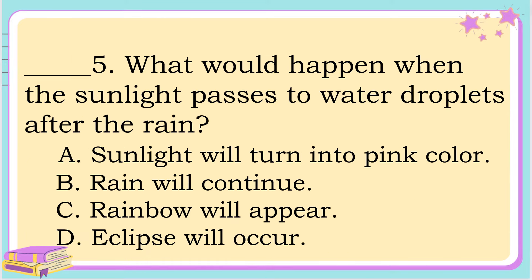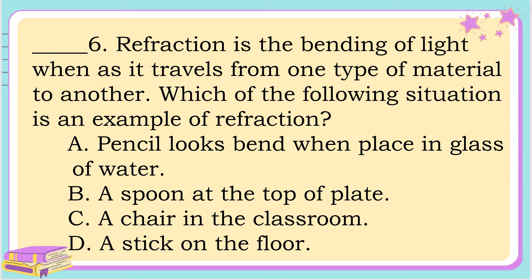Number 5. What would happen when the sunlight passes toward the raindrops after the rain? A. Sunlight will turn into pink color. B. Rain will continue. C. Rainbow will appear. Or D. Eclipse will occur. The answer is letter C. Rainbow will appear.